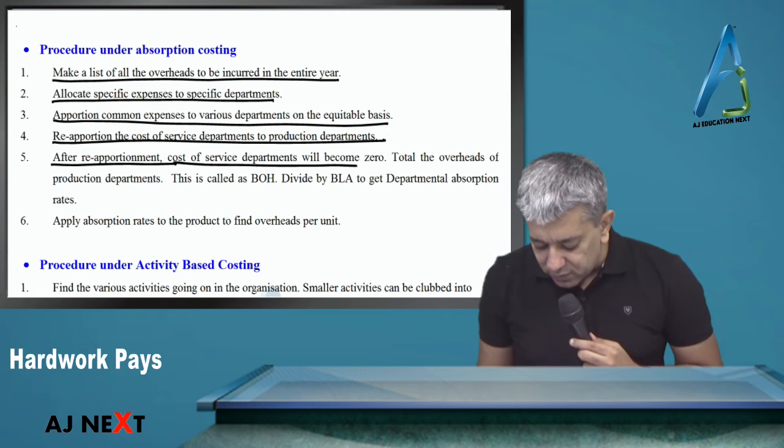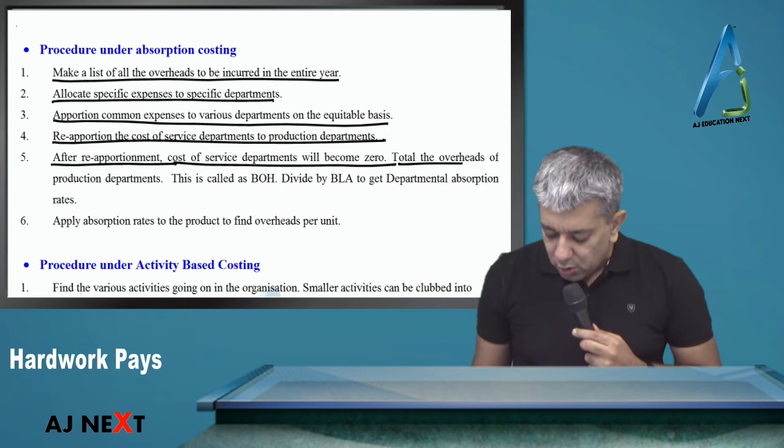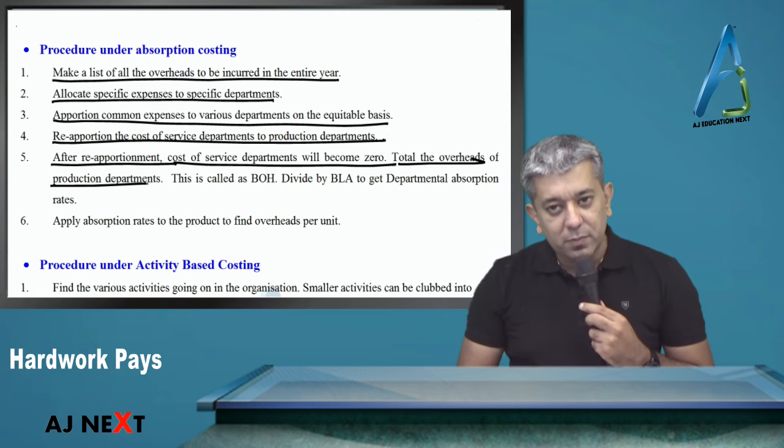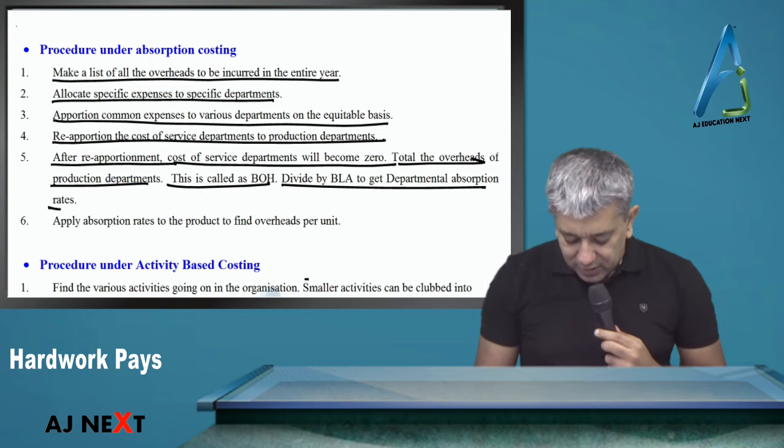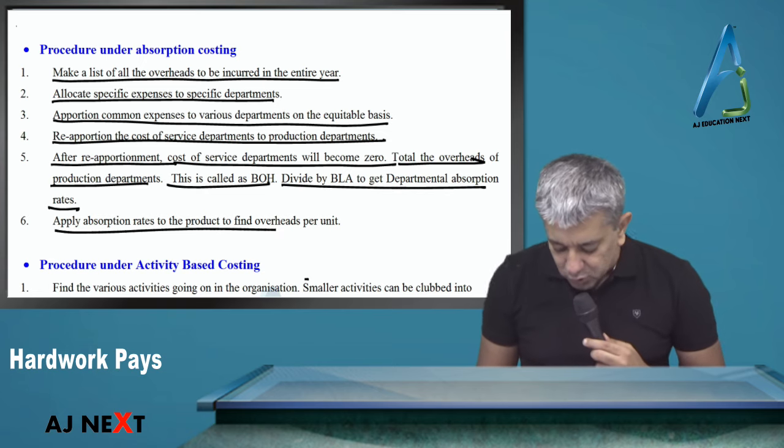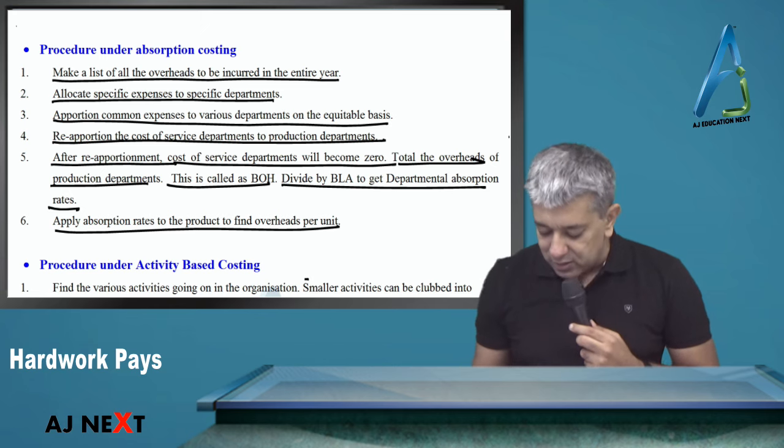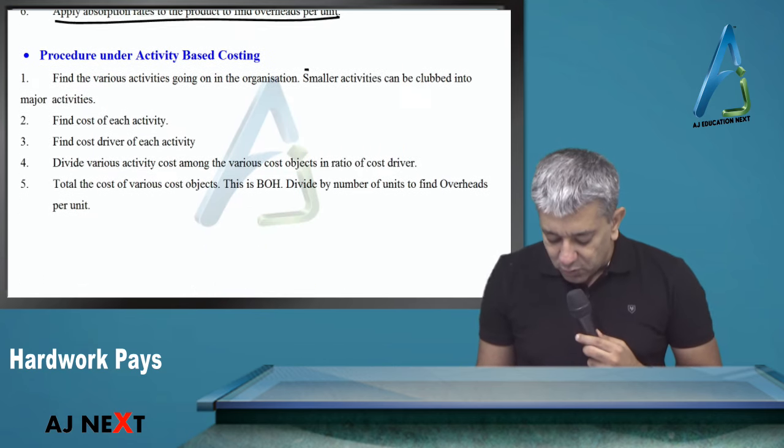Whatever common expenses remain, apportion them in some ratio. Then do re-apportionment, where service department costs come to production departments. After re-apportionment, cost of service departments becomes zero. Total the overheads of production departments, this is called BOH. Divide by base to get absorption rate and apply it to products. This is absorption costing.